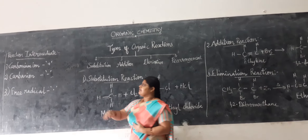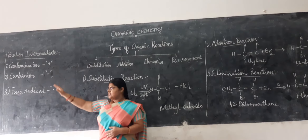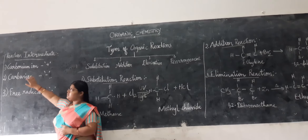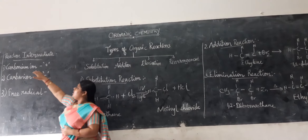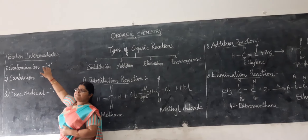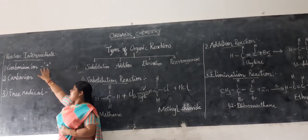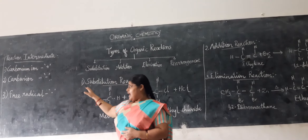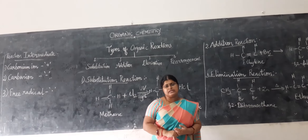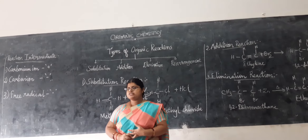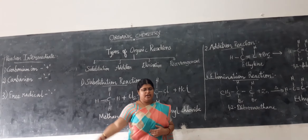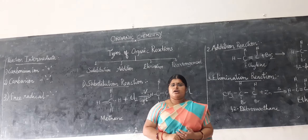Next, we are going to see reaction intermediates. The reaction intermediates are three main types: carbocation, carbanion, and free radical. The carbocation is also called carbonium ion, which carries a positive charge. Carbocations have a stability order where tertiary is more stable than secondary, and secondary is more stable than primary. Examples of carbocations include ethyl carbonium and methyl carbonium.